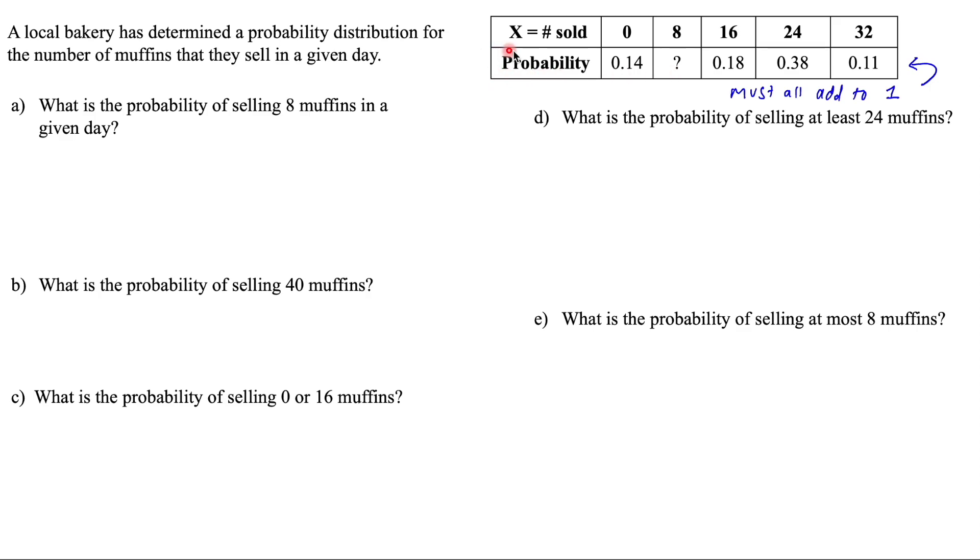We know that with a probability distribution, all of these probability values must add up to one. So if you go ahead and grab your calculator and you do one minus what all of these values added up equals, that will give us that missing number that we're looking for.